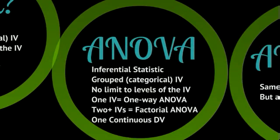So they developed the ANOVA — a much better statistic to use, and more robust. It's also an inferential statistic testing hypotheses, and it also uses a grouped or categorical independent variable. But there isn't a limit to the levels — unlike the t-test, it can have three, four, or five levels or groups for the independent variable.